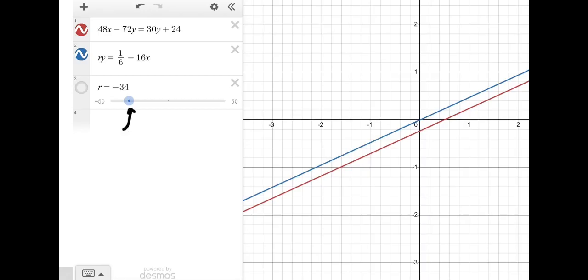Initially, it was between negative 10 and 10, but I couldn't get parallel from there, so I upped it to between negative 50 and 50, and I could achieve parallel lines at R equals negative 34.